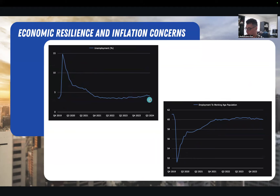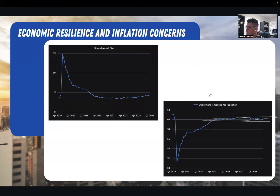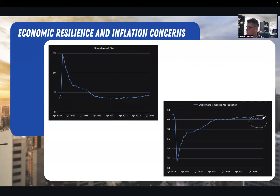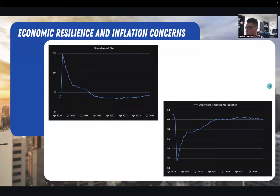When you look at the unemployment numbers, it actually went down a little bit. The big thing that could spark a recession, in my opinion, is unemployment — if we see a massive spike. I've dropped videos about the SOM rule and SOM indicator previously; those are things to really pay attention to. But when you look at the employment-to-working-age-population numbers, we're still looking good. There's nothing screaming that we're about to see a huge recession in the labor market. The labor market is still resilient — it is weakening a little bit, but it is still resilient.